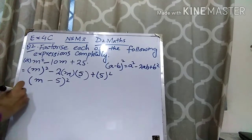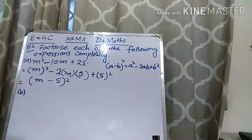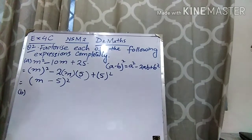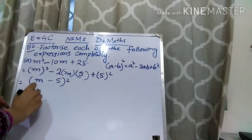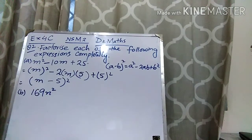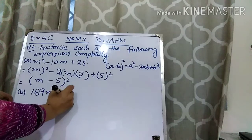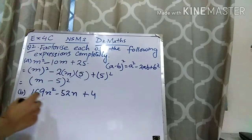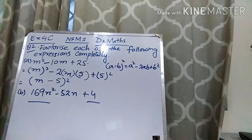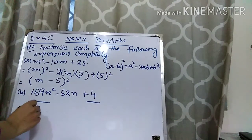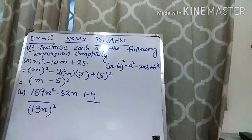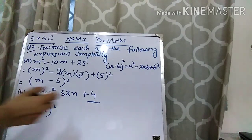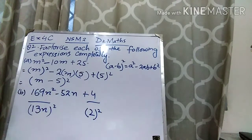When you will see more sums, then this concept will be more clear to you. Okay, 169N squared. Here you can see that the first and last terms are perfect squares. This is the perfect square of 13N — when you take the square of 13N, you will get 169N squared. And this is the perfect square of 2 — when you take the square of 2, you will get 4.